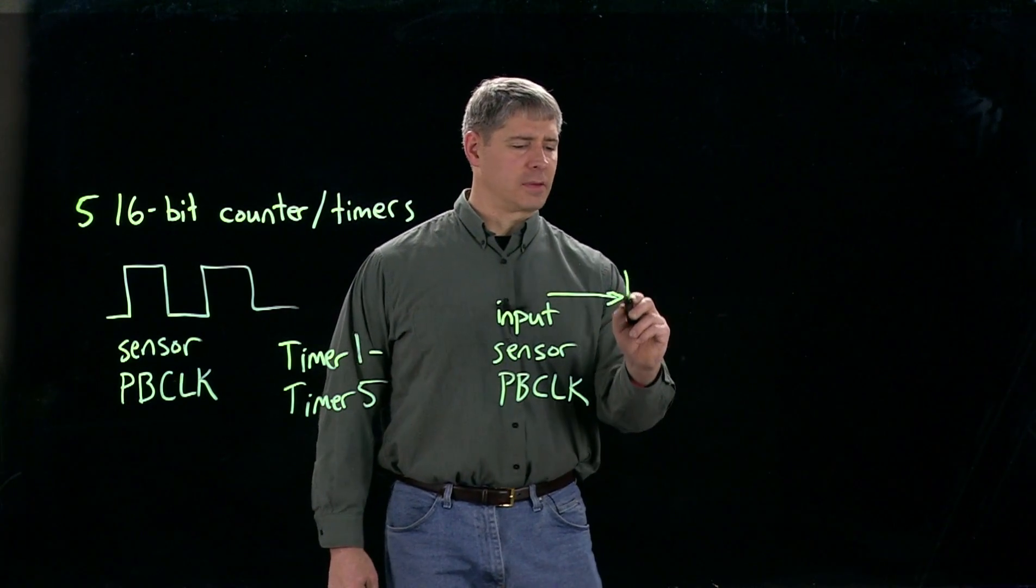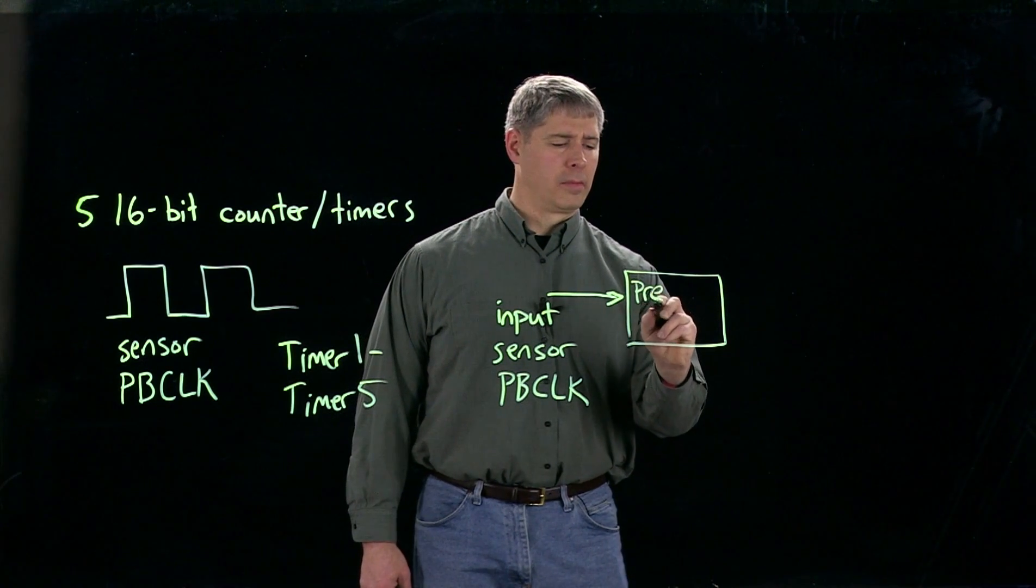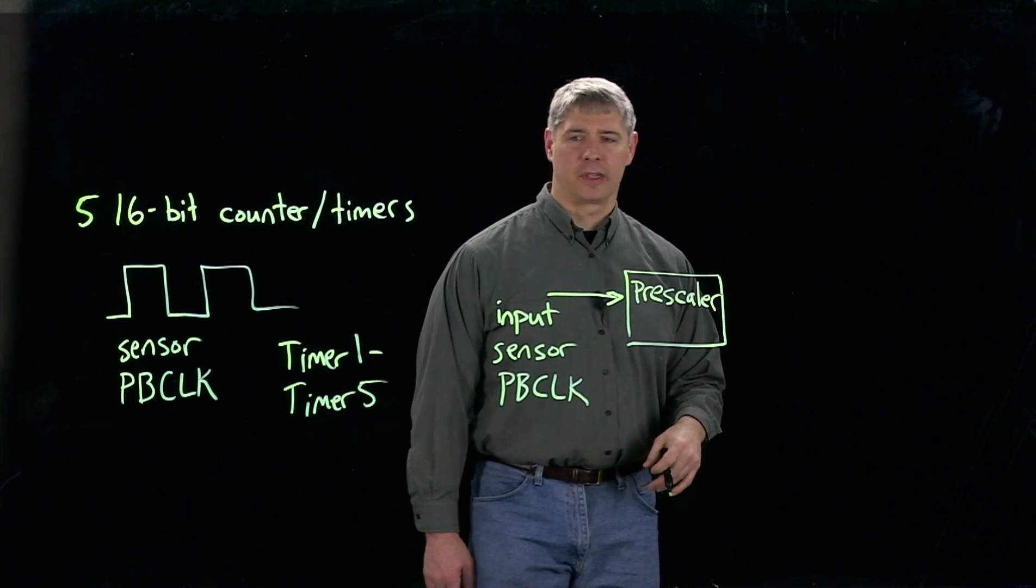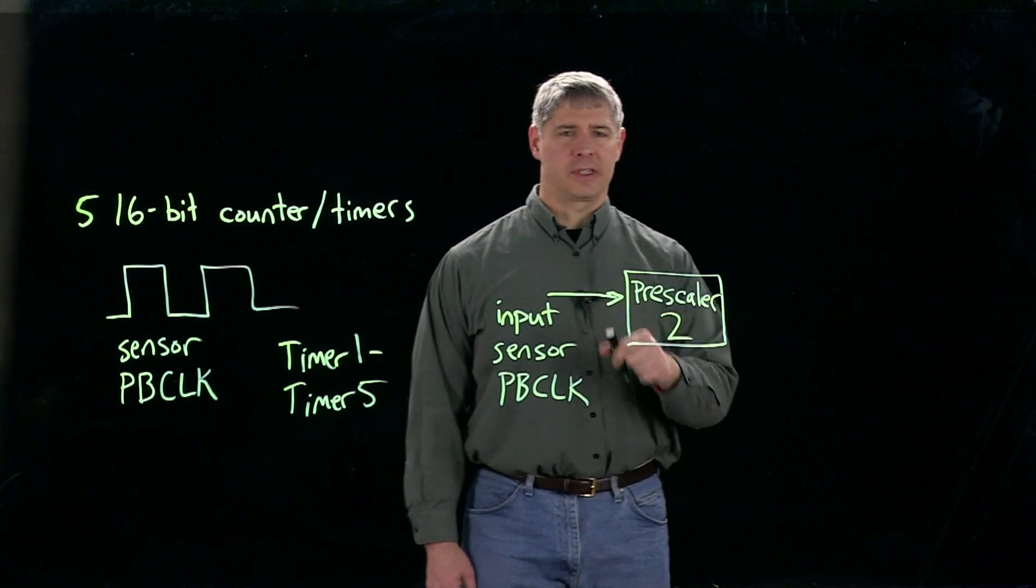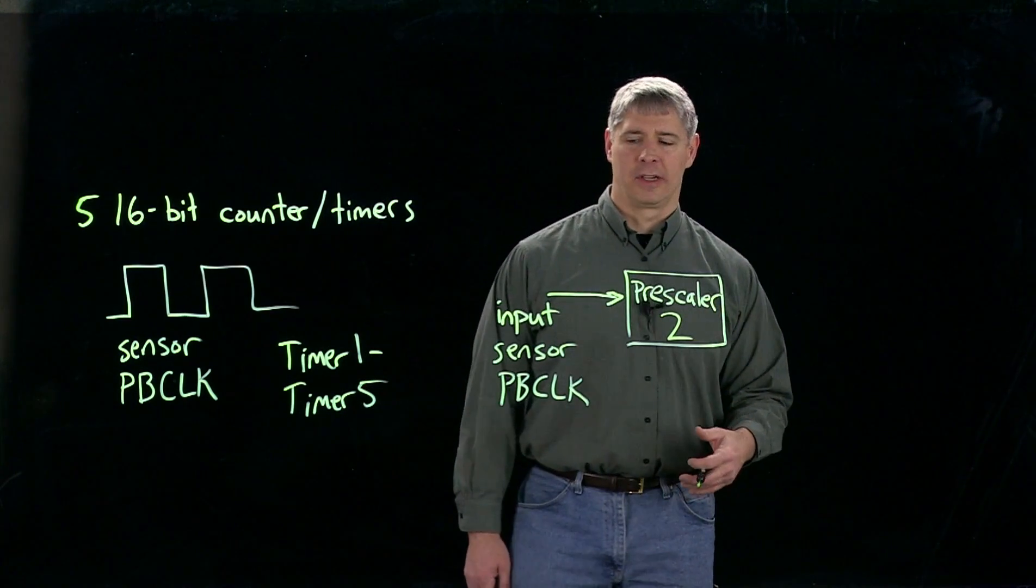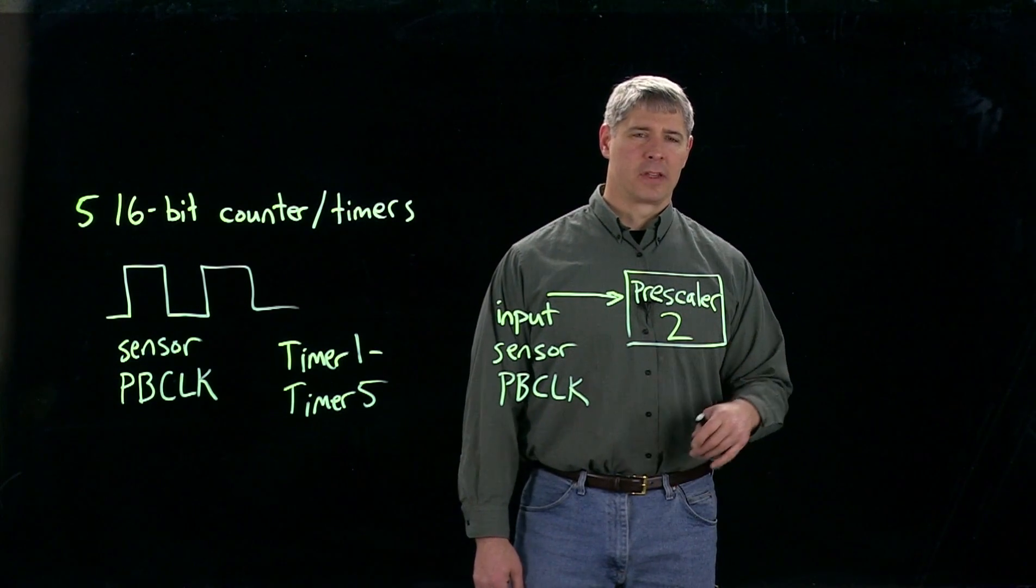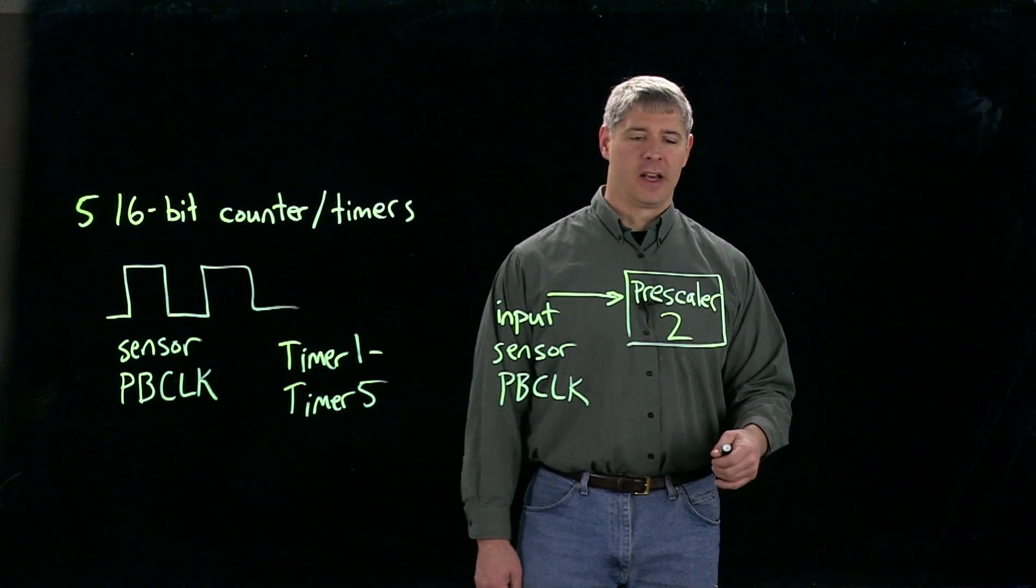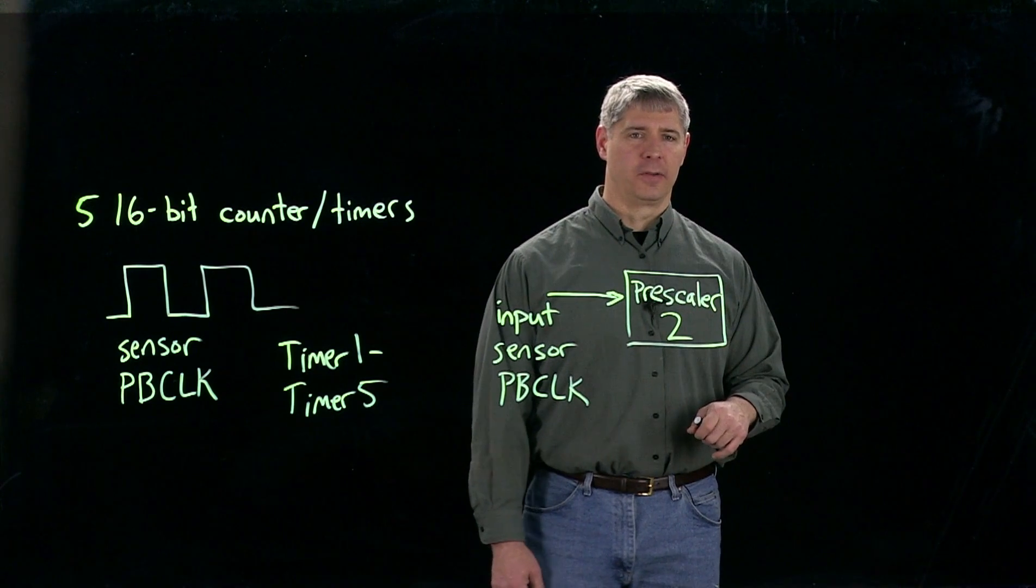And that goes into something called the prescaler. Let's say that we're working with timer 2, so I'll call it prescaler 2. What the prescaler does is it allows us to make a count on less than every single rising edge. So if we want every second edge or every fourth edge or every 64th edge to create an input to the counter, then that's what the prescaler can do for us.